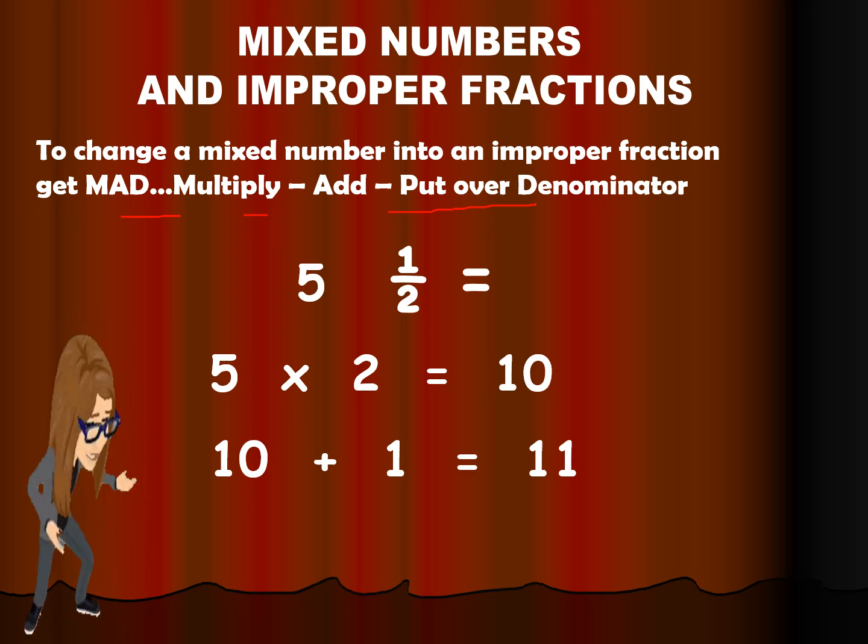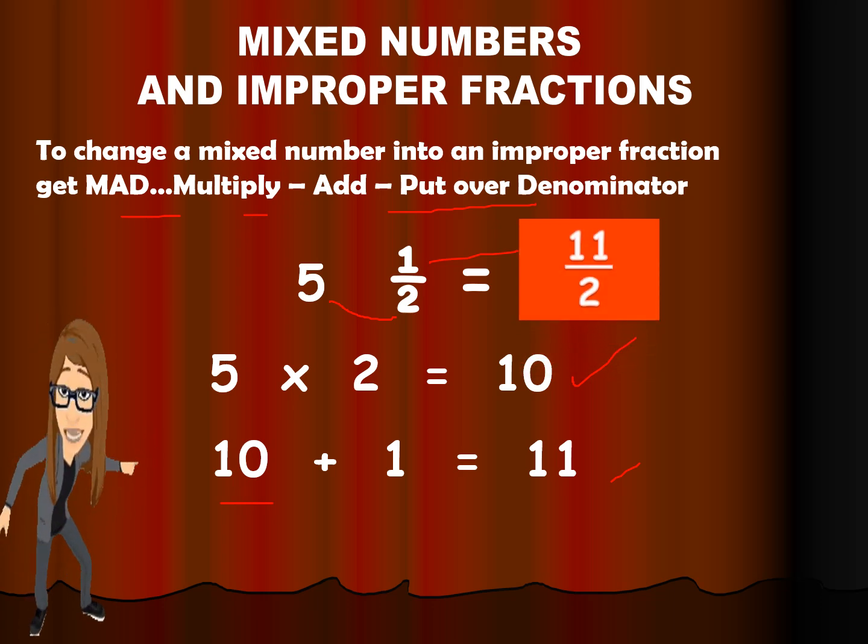The first rule is to multiply. Multiply the whole number with the denominator. So 5 times 2 is 10. Now, after multiplying, we have to add. So 10, which is the product, plus the numerator. So 10 plus 1 is 11. So what is now the answer? 11 over 2.